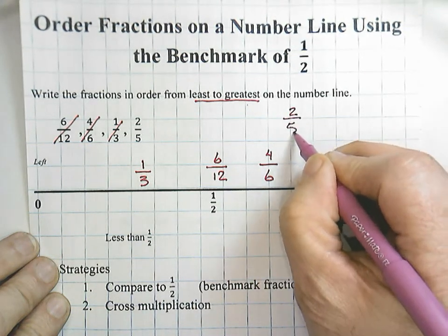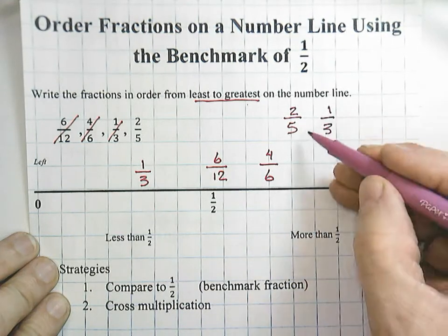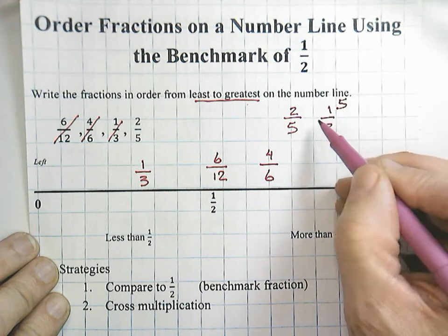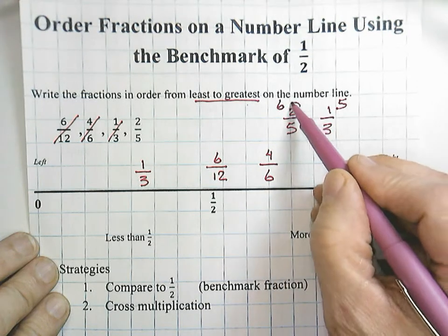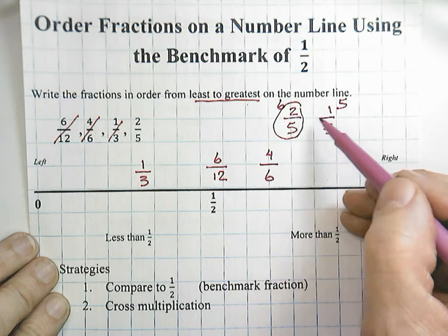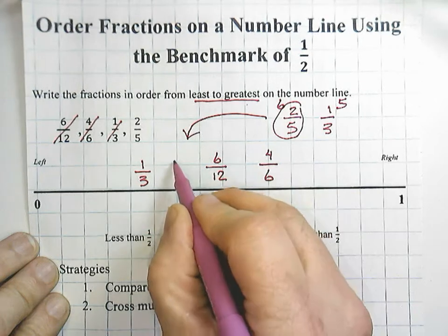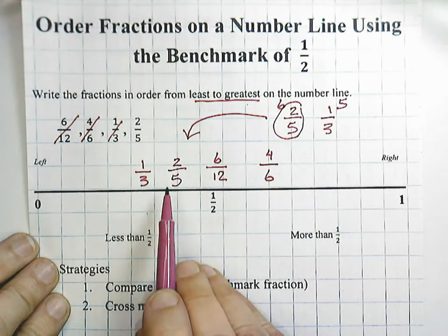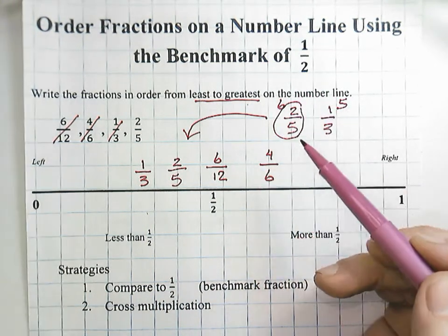I can use my cross multiplication strategy for that. I'm going to rewrite two-fifths and compare it to one-third. Five times one is five, three times two is six. When I compare six and five, I can see that six is greater, which means that two-fifths is greater than one-third. So we're going to place the two-fifths here. This is what we mean when we are ordering fractions on a number line using the primary strategy of the benchmark of one-half.